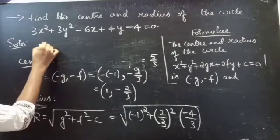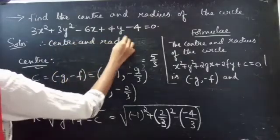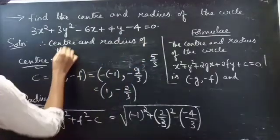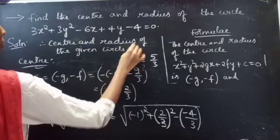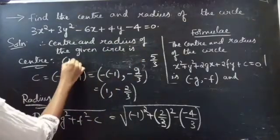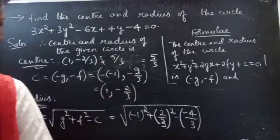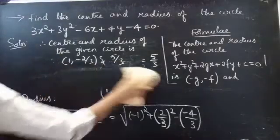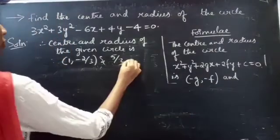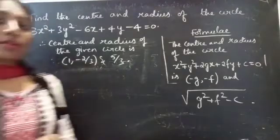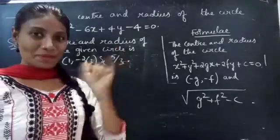Therefore, the center and radius of the given circle are (1, minus 2/3) and 5/3 respectively. This completes the problem. We have seen a problem from circles in this video. Hope you understand. We will see you in the next video — until then, bye bye.